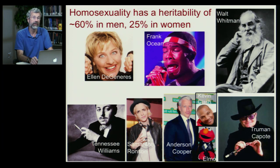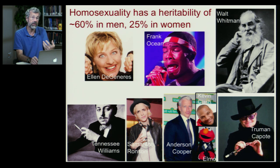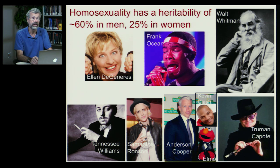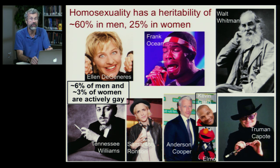Sexual orientation is also found to have quite a high heritability — estimated as high as 60% in men and maybe as high as 25% in women. When people describe their experiences growing up, especially in societies that did not approve of homosexuality, it's like they were born that way; it's something they couldn't really help. Looking at patterns of heritability from parents to offspring, there is a genetic component to this behavior. It's a human universal — not just in Western societies, but all over the world, about 6% of men and about 3% of women are actively gay. This gives us reason to suspect that sexual orientation does have a genetic component.